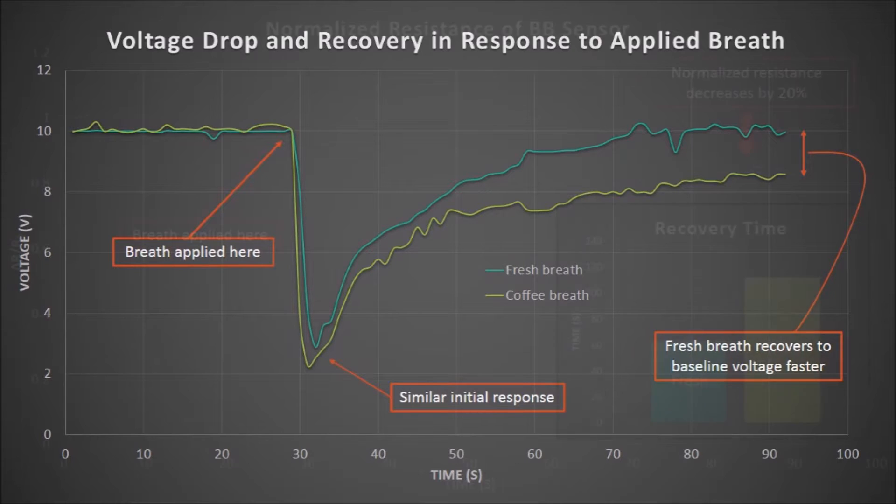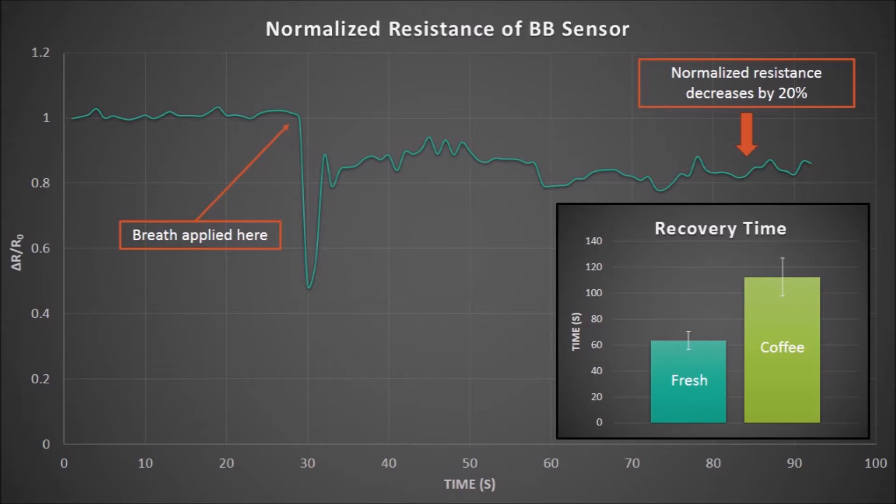When looking at the normalized resistance versus time graph, we can see that there is about a 20% decrease in resistance when bad breath is applied in comparison to fresh breath.